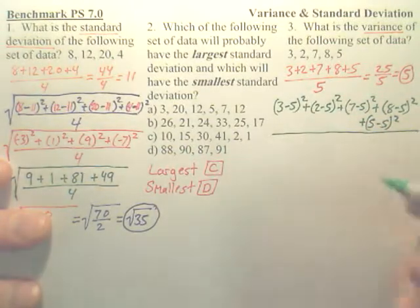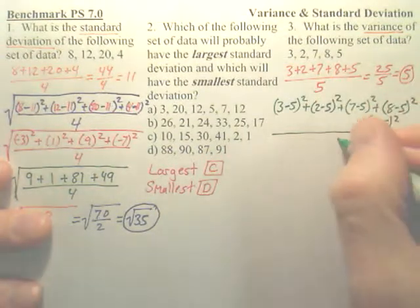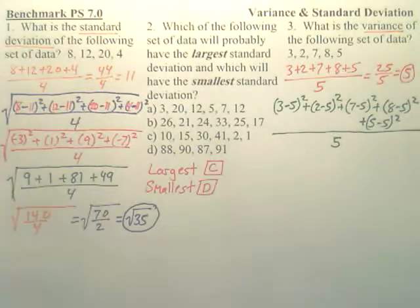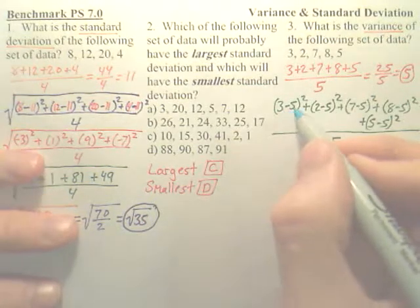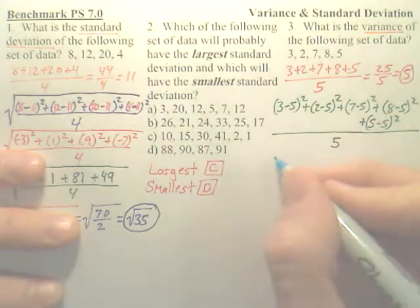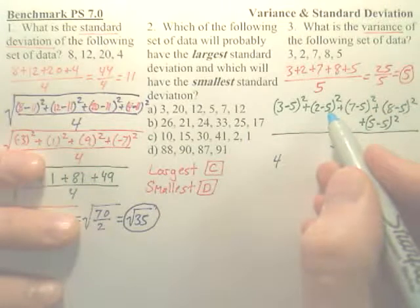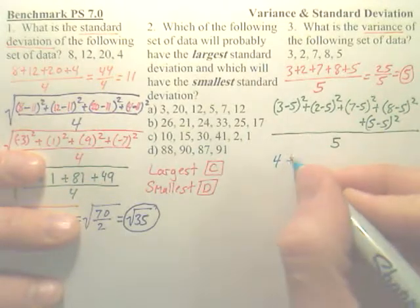And what's that all over? That's all over the number of terms, which is 5. A lot of people forget that 5. Okay. So, we got negative 3 minus 5 is negative 2. What's negative 2 squared? Negative 2 squared is 4. 2 minus 5 is negative 3. Negative 3 squared is 9.